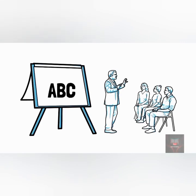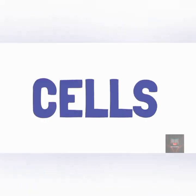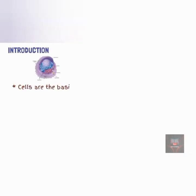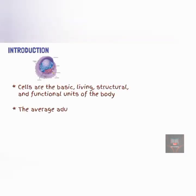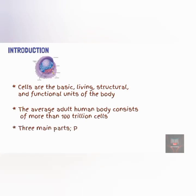Welcome to ABC tutorial. Today we are going to talk about cells. Cells are the basic living, structural, and functional unit of the body. The average human adult has about 100 trillion cells.